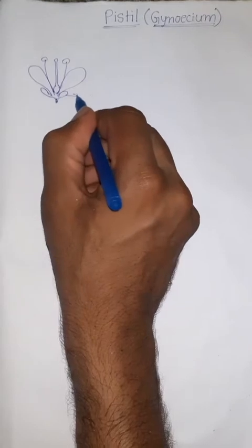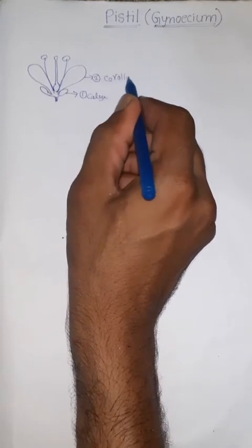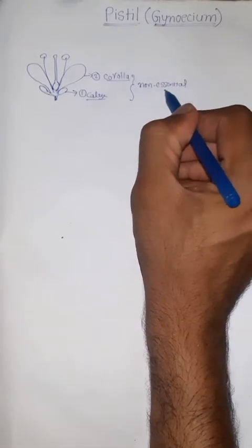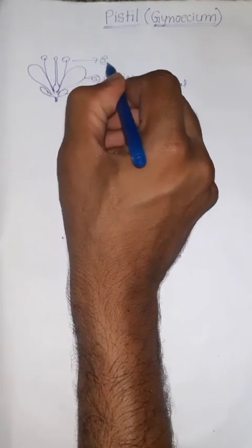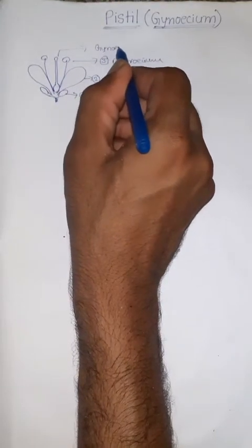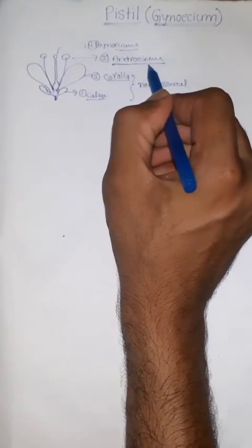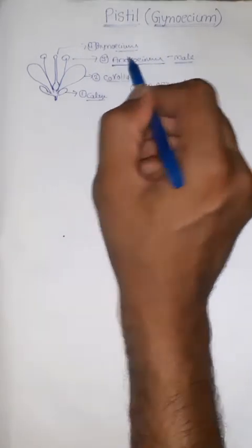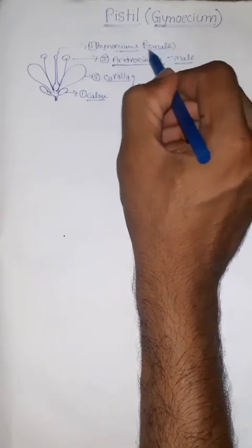Calyx and Corolla together are called Non-Essential Organs of the Flower. The inner two whorls — Androecium (third whorl) and Gynoecium (fourth whorl) — are the reproductive structures. Androecium is the male reproductive structure, already discussed in previous lectures. The innermost, fourth whorl, is Gynoecium, which is the female reproductive structure.